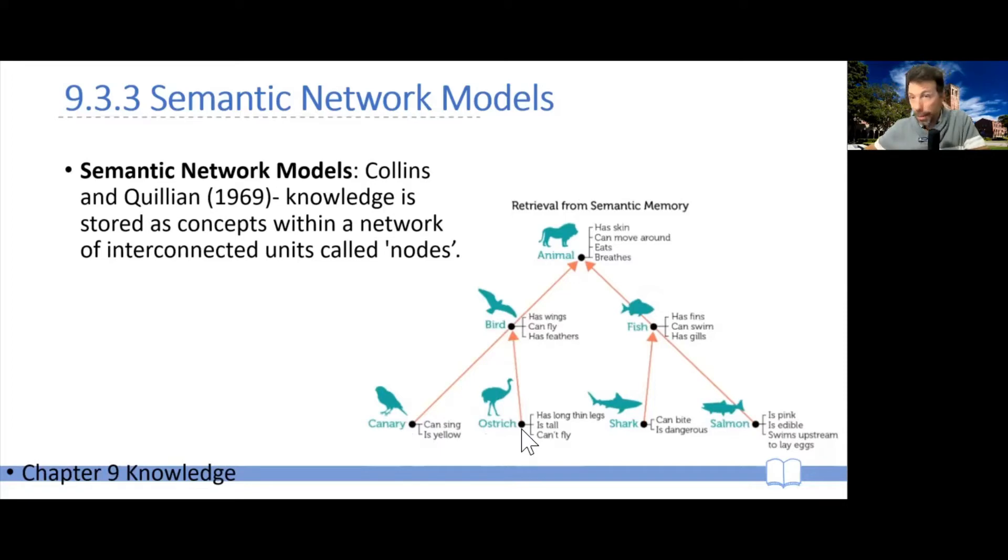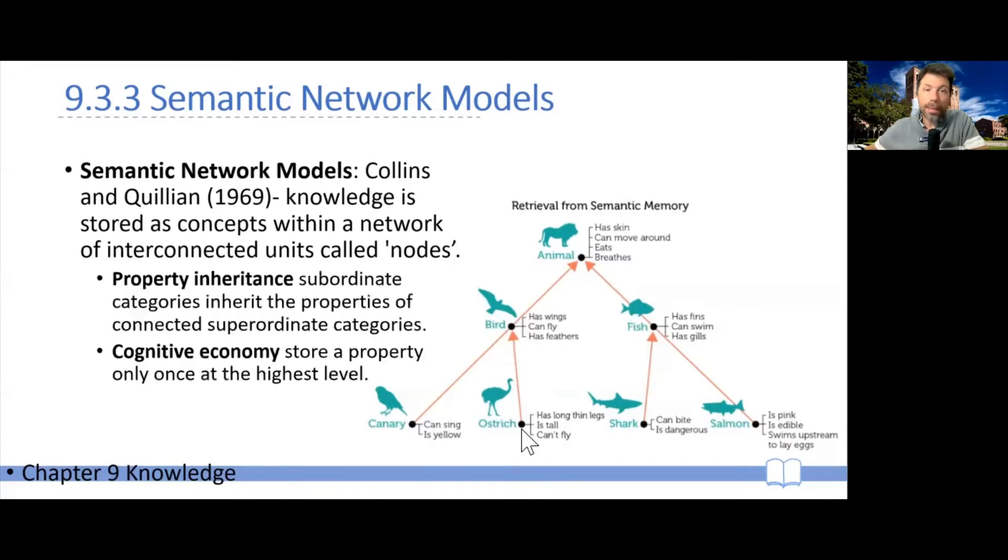Now, this network has two important properties. One is that of property inheritance. And the idea is that each node inherits the properties of its mother node. So bird has its own properties, it has wings, can fly, has feathers, but also inherits all the properties of animal. So bird also has skin, can move around, eats, breathes, etc.